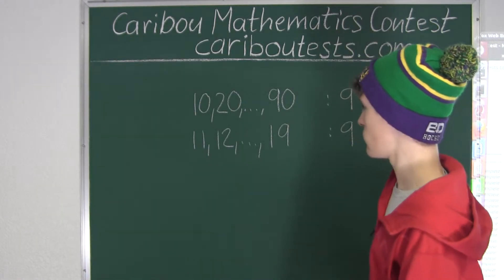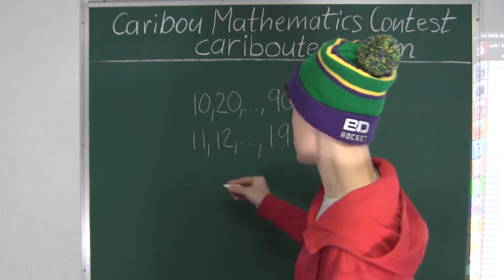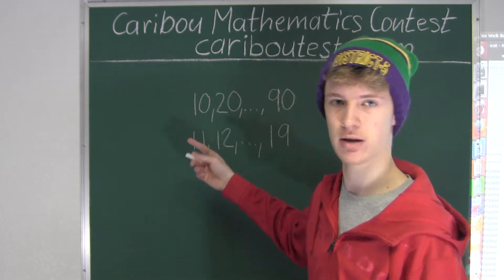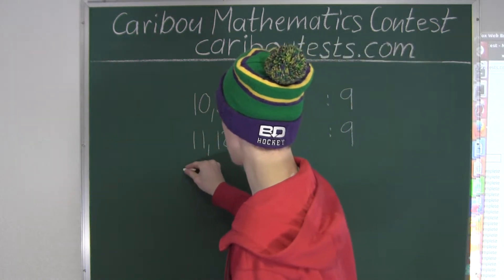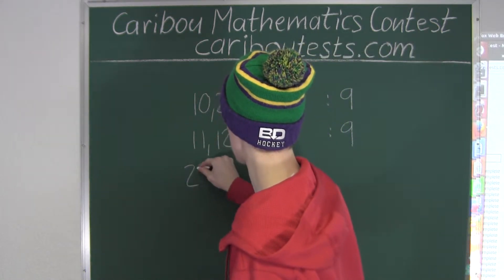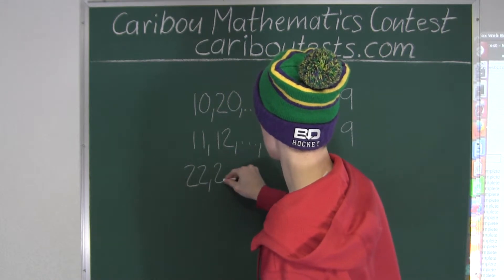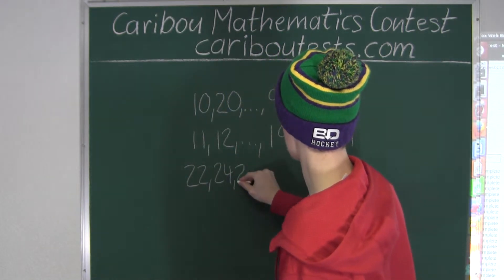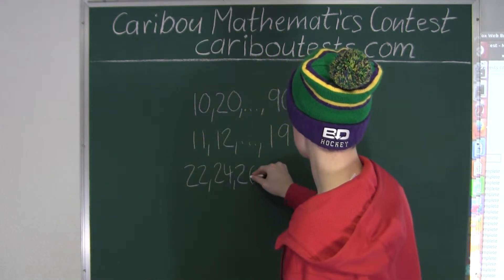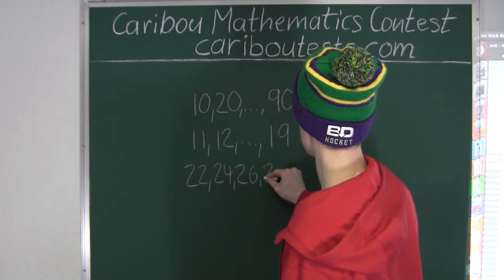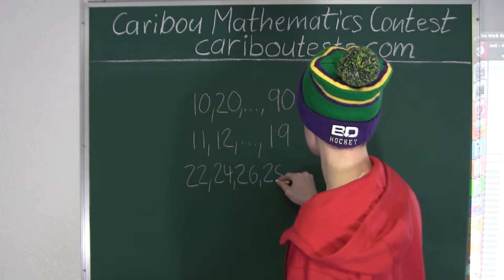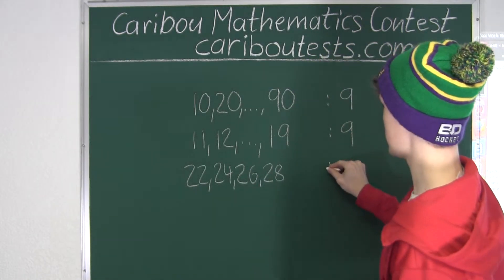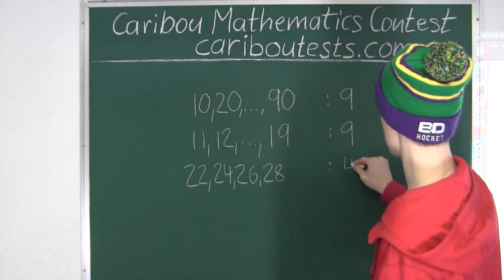Now let's look at the 20s. Since we already have 20, we start with 22, 24, 26, and 28. So that is 4 numbers.